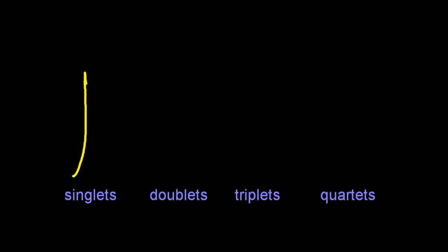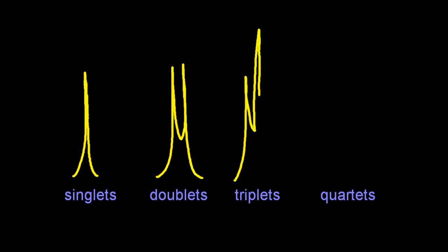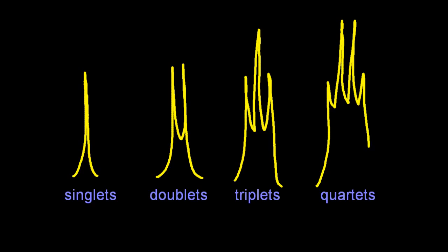We need to give these names. So the splitting patterns are singlets, doublets, triplets, and quartets. And they have that distinctive kind of Lord of the Rings tower look to them. We need to explore.